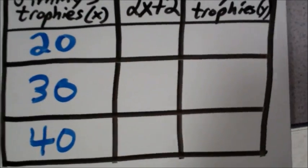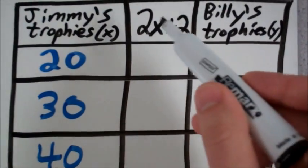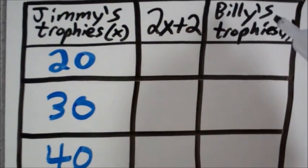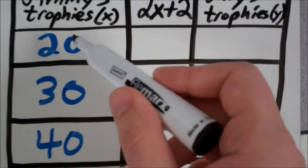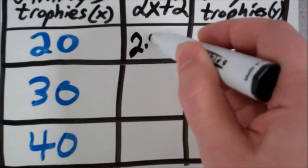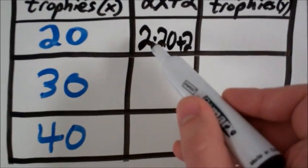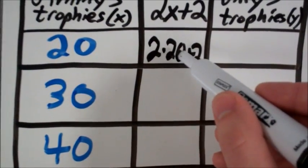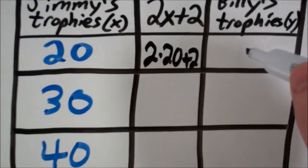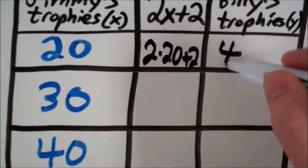Here's what our table looks like. We have Jimmy's trophies, our function, and Billy's trophies. When we plug in 20, we have 2 times 20 plus 2. Remember, with order of operations, we have to do multiplication first. 2 times 20 is 40. 40 plus 2 is 42.